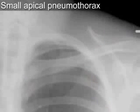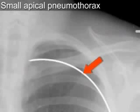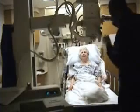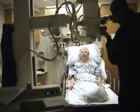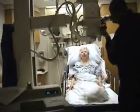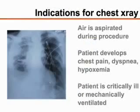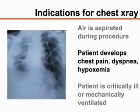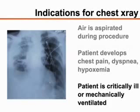Pneumothorax is uncommon after thoracentesis and, when present, it rarely requires the placement of a chest tube. Chest radiographs are not required after simple, uncomplicated procedures. Radiography of the chest should be performed if air was aspirated during the procedure, if chest pain, dyspnea, or hypoxemia develops, or if the patient is critically ill or undergoing mechanical ventilation.